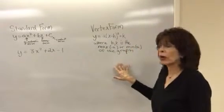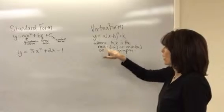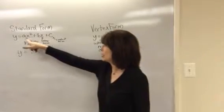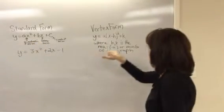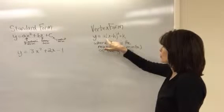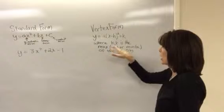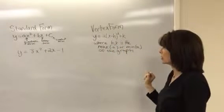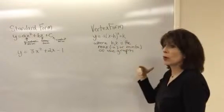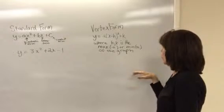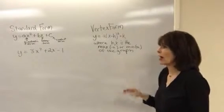I'm going to use completing the square to change it to the vertex form where you have a, which is the same quantity as the a here, times the perfect square x minus h plus k, where h and k is the maximum if you have a minus a or the minimum if you have a plus a of the graph.